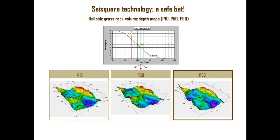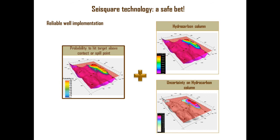Here, where you really could save your time and money. These maps are also possible to simulate probability maps. For example, probability to hit target about contact or spill point. Hydrocarbon column. Uncertainty on hydrocarbon columns. This probability map could help you to study geometry of the reservoir and to understand if the reservoirs are connected between each other or not.